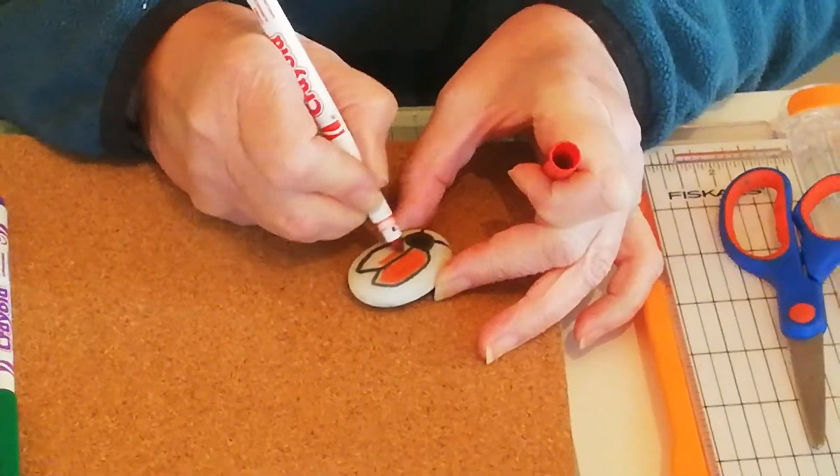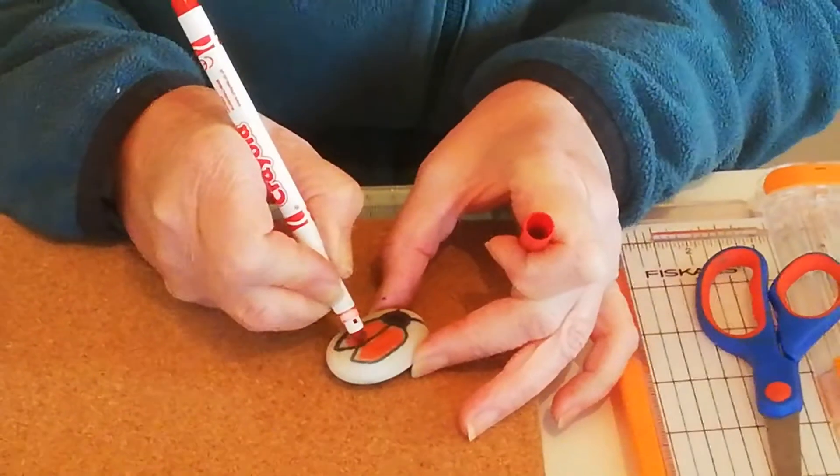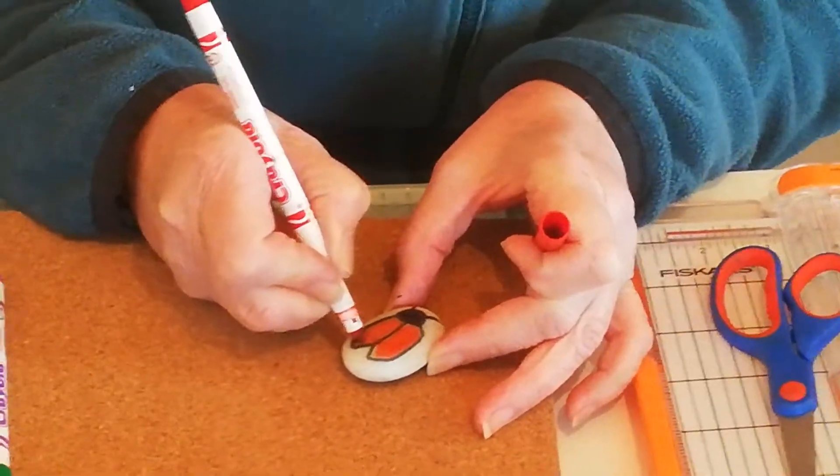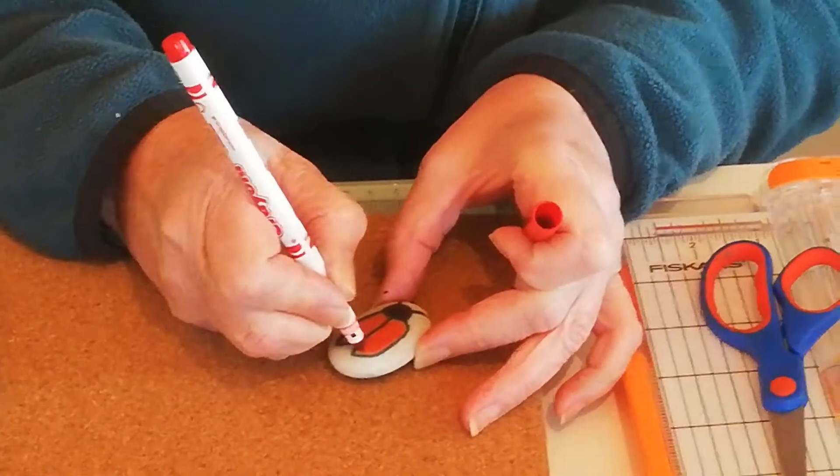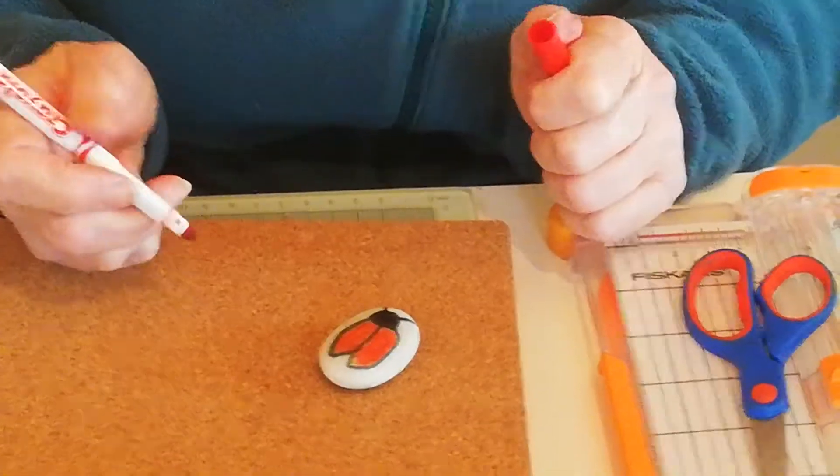So I'm coloring the two wings in red and then we're going to press the pause button because I have to let the Crayola dry before I put the little black dots on. So I will be back in two minutes and we'll do his dots.